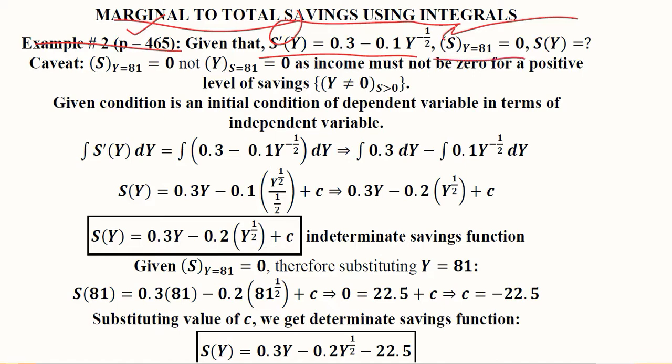We are also given that at income 81, there is no saving because at income 81 the basic needs are still being met, due to which the consumer is unable to save any amount. Here there is a caveat.